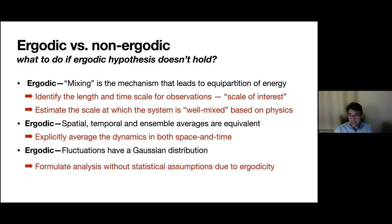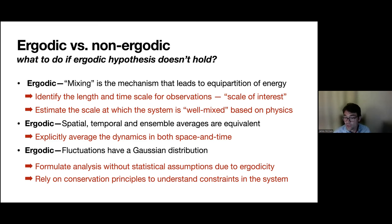If we have an ergodic system, spatial, temporal, and ensemble averages are equivalent — comparing these averages is perhaps the most critical test for ergodicity. If you don't have an ergodic system, the conclusion we reached is that you have to explicitly average the dynamics in space and time. You just integrate the actual observed dynamics, and that provides a path forward because it doesn't depend on ergodicity — it just depends on your functions being integrable. We rely on conservation principles to understand what constraints they impose, rather than making statistical assumptions about fluctuations.